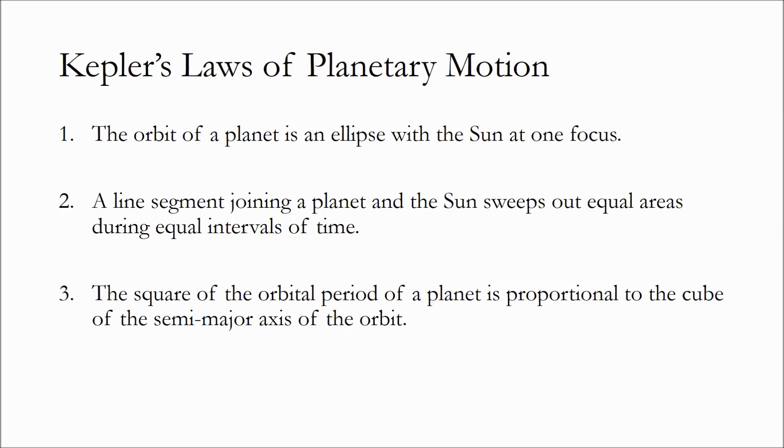Kepler's laws of planetary motion are as follows. First law, the orbit of a planet is an ellipse with the sun at one focus. Second law, a line segment joining a planet and the sun sweeps out equal areas during equal intervals of time. Third law, the square of the orbital period of a planet is proportional to the cube of the semi-major axis of the orbit.